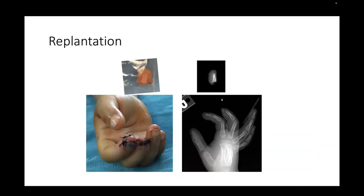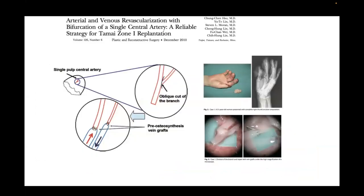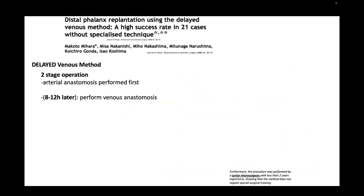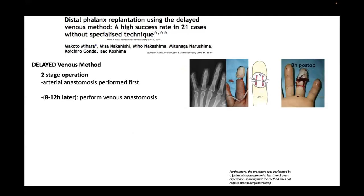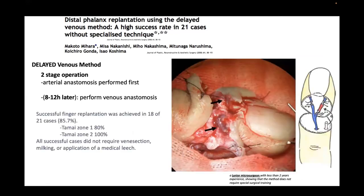Replantation can be considered when the amputation is more proximal, but it's important to recognize that this is often a very distal and crushed part with a low likelihood of success. Talk to the family about the possible need for leech therapy. For these distal replantations, especially in older patients, one technique can help with performing both arterial and venous anastomosis. A technique from Japan involves returning the patient 8-12 hours after the arterial anastomosis, when the engorged digit makes it much easier to find the vein and perform the anastomosis.